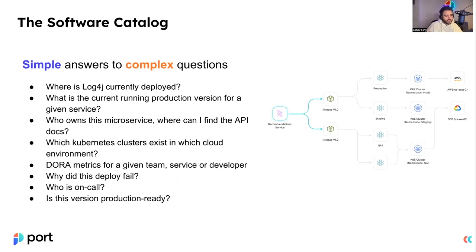Questions like: where is log4j currently deployed across my infrastructure? What is the current running production version of a given service? Who owns this microservice? Where can I find the API for it? You can imagine the software catalog as a visibility layer into the developed components — it can be anything from microservices, versions, environments, cloud resources, cloud accounts, and more. This software catalog is a way to represent all that with all the metadata your engineering needs, in one place, in a way they can understand.